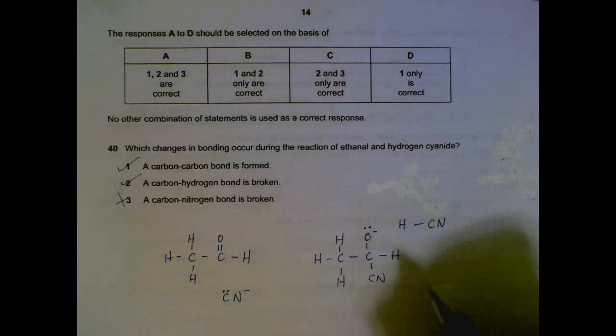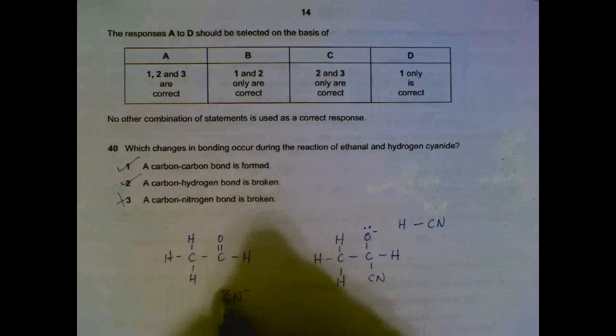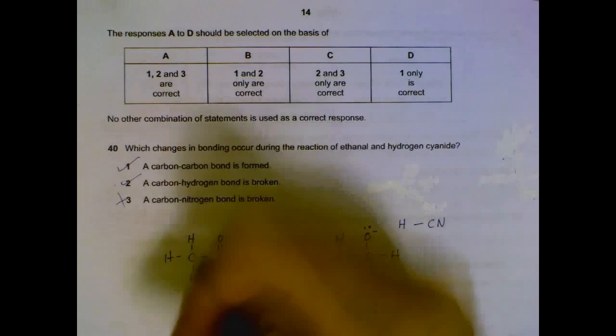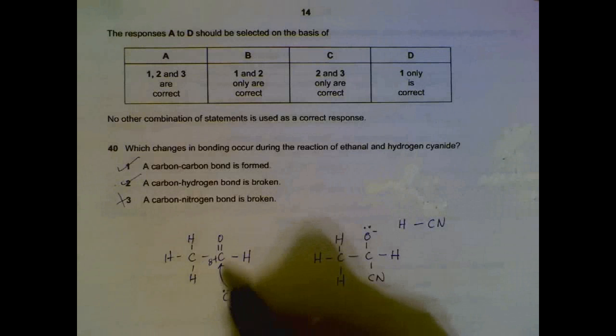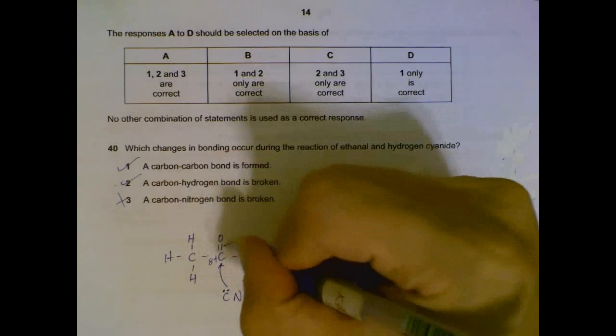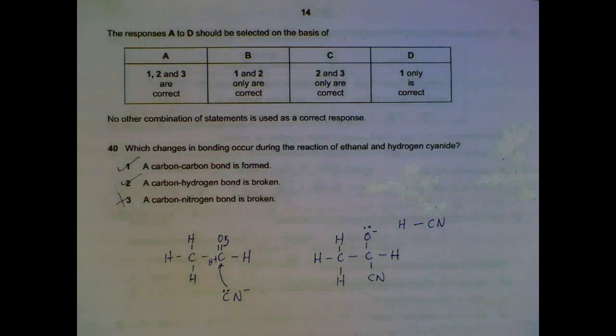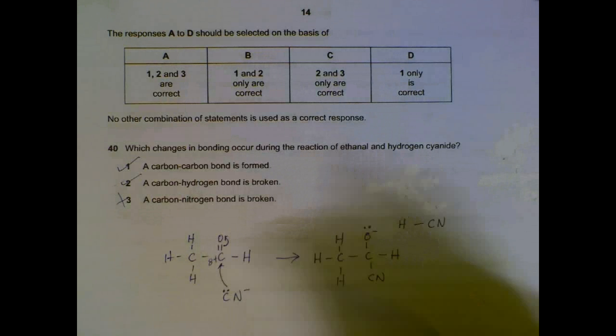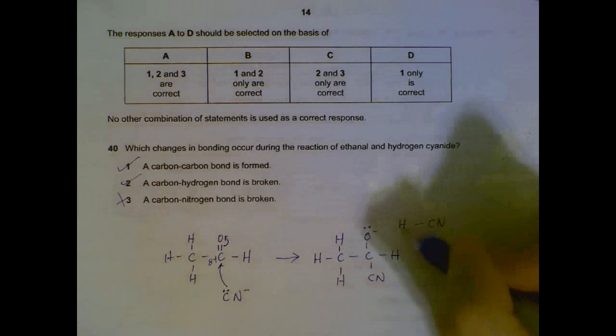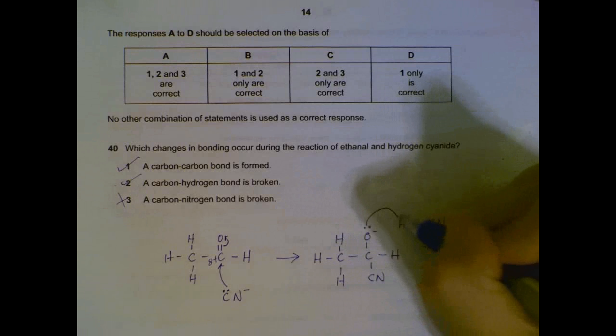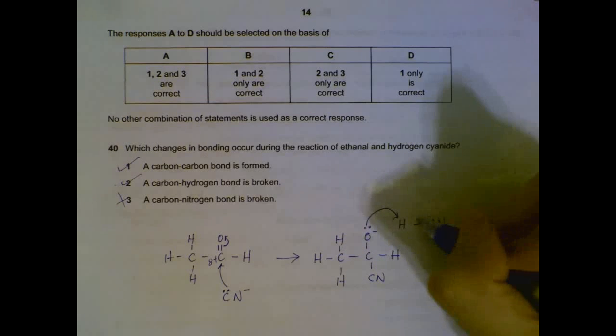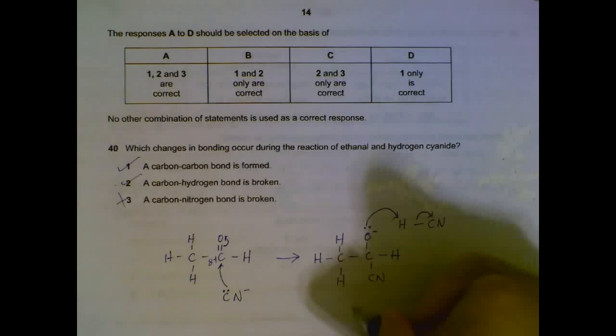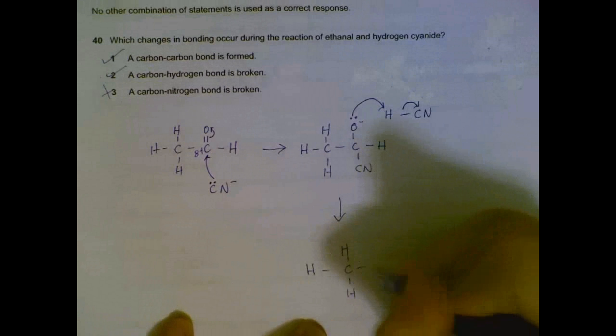Number 40, ethanol and hydrogen cyanide. So the mechanism will involve the nucleophile, the cyanide ions attacking the partial positive carbon here. So we have a carbon-carbon bond form. Then a bond between carbon and oxygen, or at least one pair of electrons will be pushed up to the oxygen. So we have this intermediate here. And we have HCN hydrogen cyanide. The lone pair will form oxygen and hydrogen, will form a new bond. And then hydrogen and carbon, the bonds will be broken.